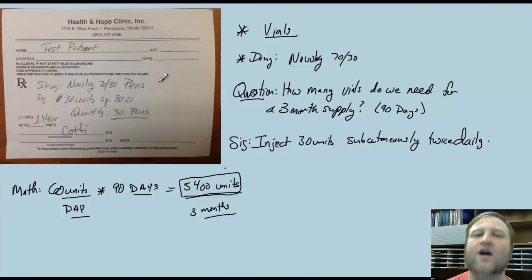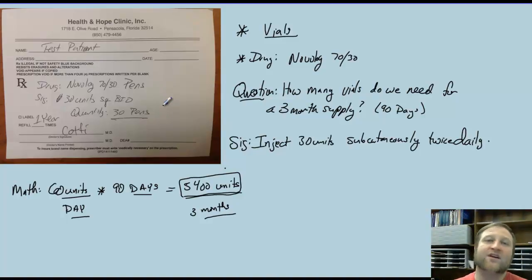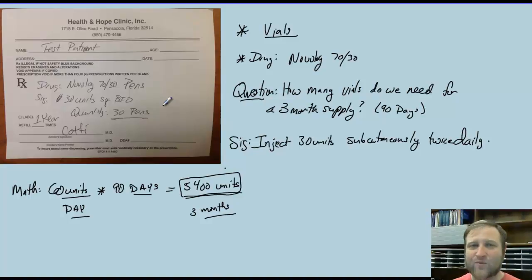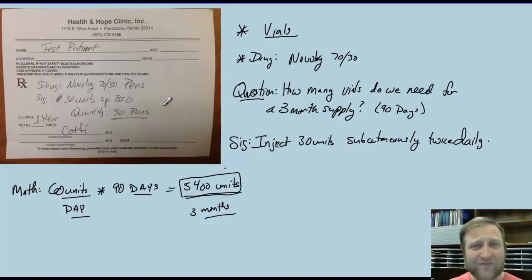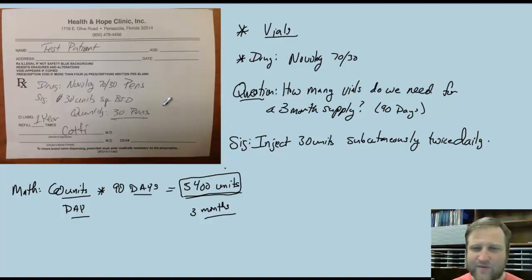Hopefully you confirmed with Dr. Cotty that the patient's dose isn't expected to increase significantly — it creates more cumbersome effort if we have to cancel and rewrite the application. So again, talk it out with providers and make sure we get the patient the correct amount of insulin. This patient will use 5,400 units every three months.